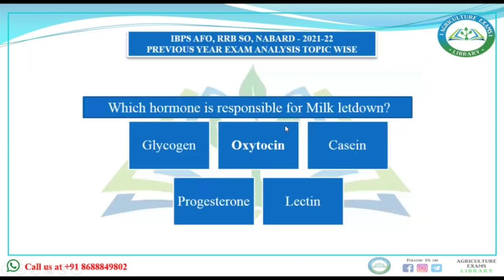Our first question is: which hormone is responsible for milk letdown? This question has been discussed previously because we have talked about oxytocin before also. The options are glycogen, oxytocin, casein, progesterone, and lectin. Before answering, let's understand each of these five options.